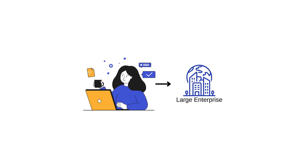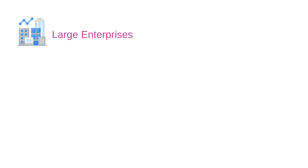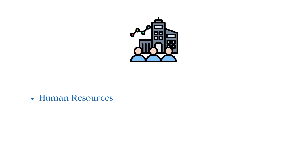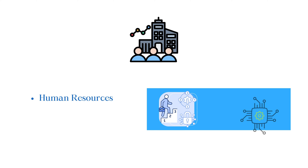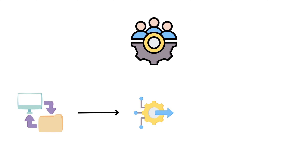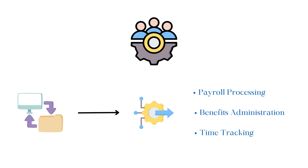Let's imagine we have a large enterprise. In large enterprises, we typically have business functions like production, sales and marketing, operations, finance, research and development, customer service, information technology, human resources, and legal and compliance. Human resources plays a vital role and is the core of the enterprise, because it handles people. Human resource management software is crucial for organizations as it streamlines administrative tasks like payroll processing, benefits administration, and time tracking to boost efficiency and accuracy.